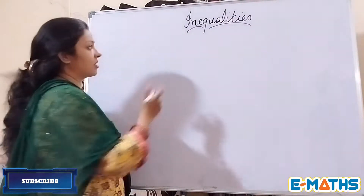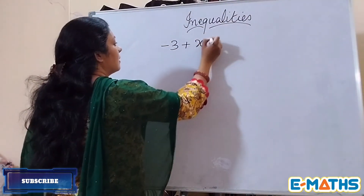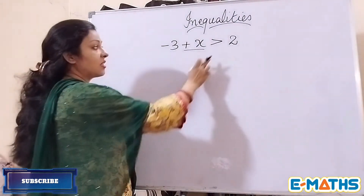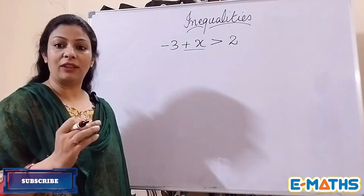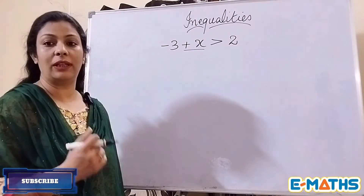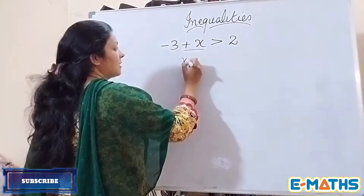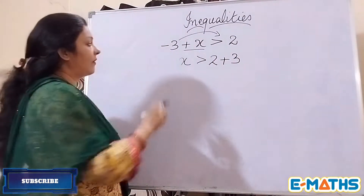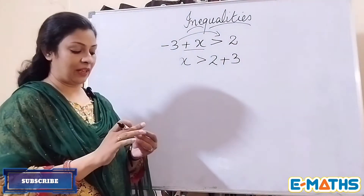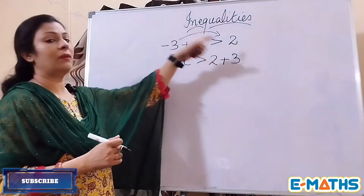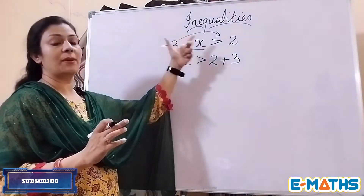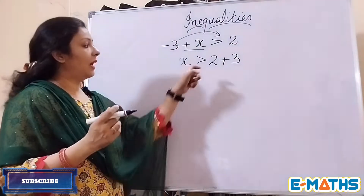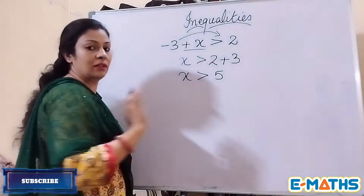Let me first tell you the cases where the sign doesn't change. If we have minus 3 plus x greater than 2, our variable is positive so we don't have to change the sign of inequality. We transpose minus 3 to the other side — it becomes plus 3 — so x is greater than 2 plus 3, which gives x greater than 5. We solved it using transposition without changing the sign.